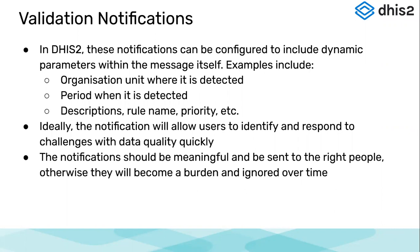You can define the content of the notification through these dynamic parameters. We will see a validation rule notification which has been already pre-configured, and see what parameters we used when creating it. The prime focus here is to allow users to identify and respond to challenges with the data quality checks done by the supervisor or program manager. When you receive a notification, you can quickly see what challenges the system has identified with the data and what should be corrected based on the descriptions available in the validation rule construct.